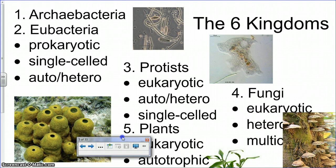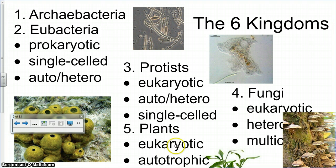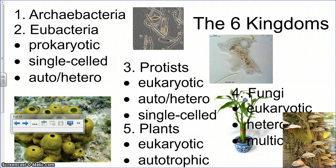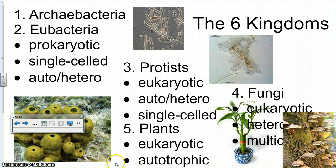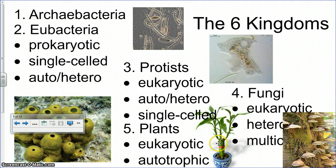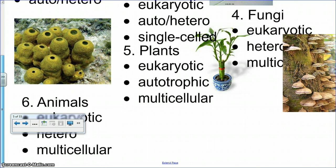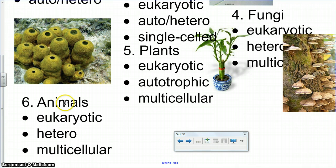Plants are eukaryotic, which means they have a nucleus. They're autotrophic, which means they make their own food. And they're multicellular — made of more than one cell, as we know from looking at plants under the microscope. Animals — like us — our cells have nuclei, we have to ingest food in order to get energy, and we're made of more than one cell.